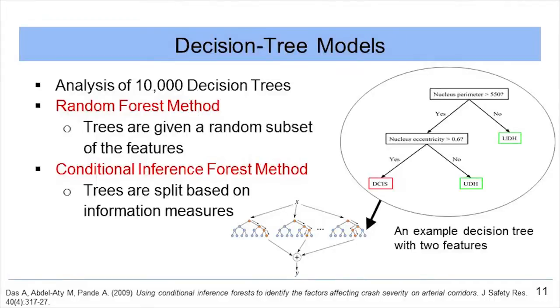In practice, both deep learning models tend to perform best on larger datasets and have been shown to be very successful in big data processing problems. Both decision tree models consisted of 10,000 decision trees, where each tree makes a prediction on whether a given sample is UDH or DCIS based on the feature values. In the random forest method, each tree is given a random subset of features, while the conditional inference forest splits the trees along nodes based on information measures.